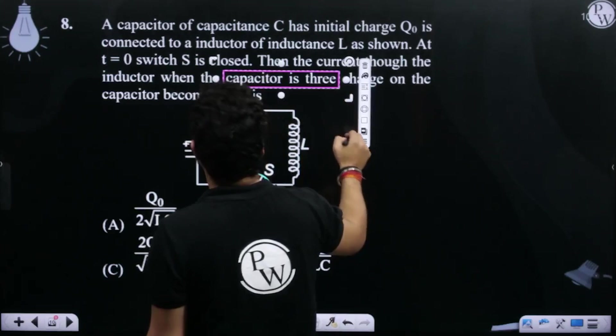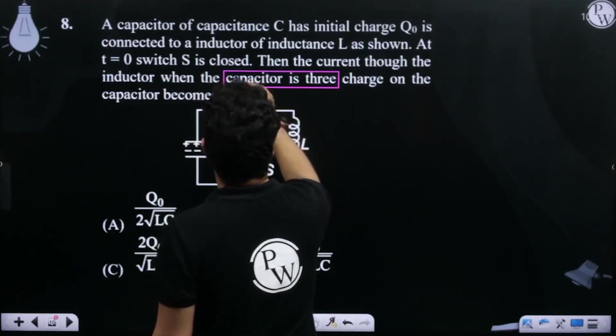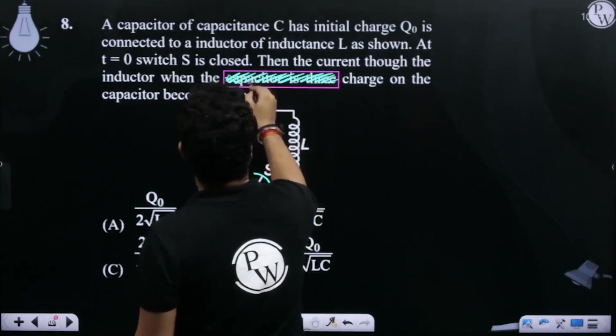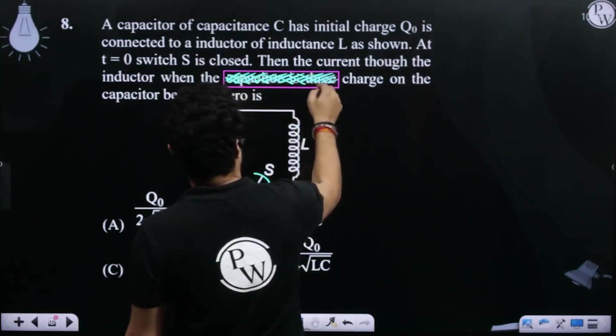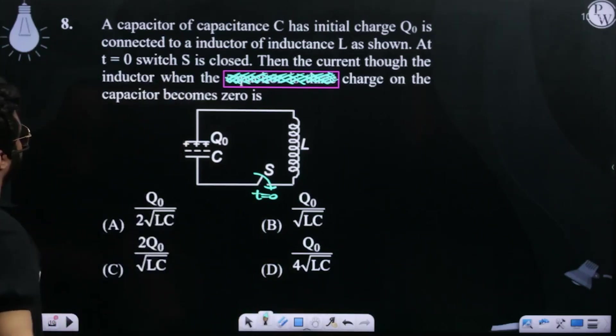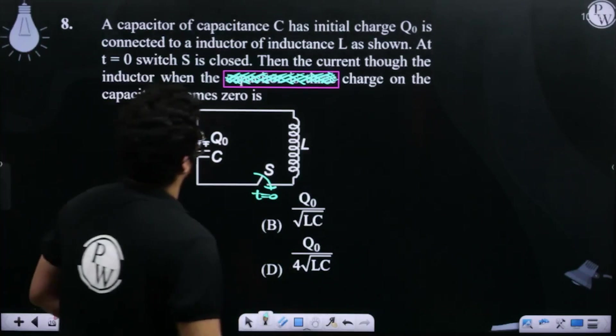Then the current through the inductor when the charge on the capacitor becomes 0.